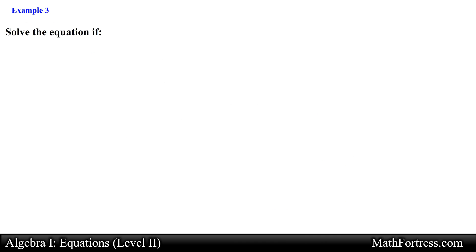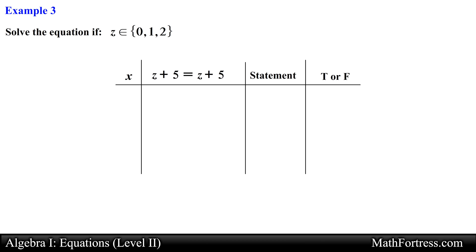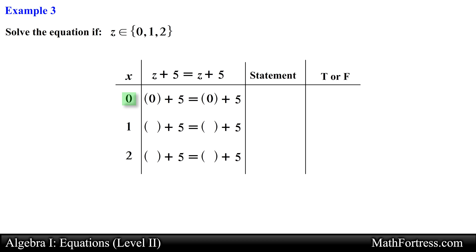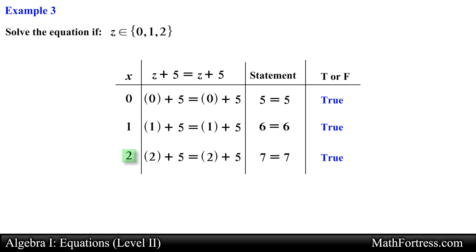Let's try the next example: solve the equation z plus 5 is equal to z plus 5 if z is an element of 0, 1, and 2. Once again we set up a table and systematically go through each element. Substituting the first element yields 5 is equal to 5, which is true. The second element 1 yields 6 is equal to 6, also true. The third element 2 yields 7 is equal to 7, also true.